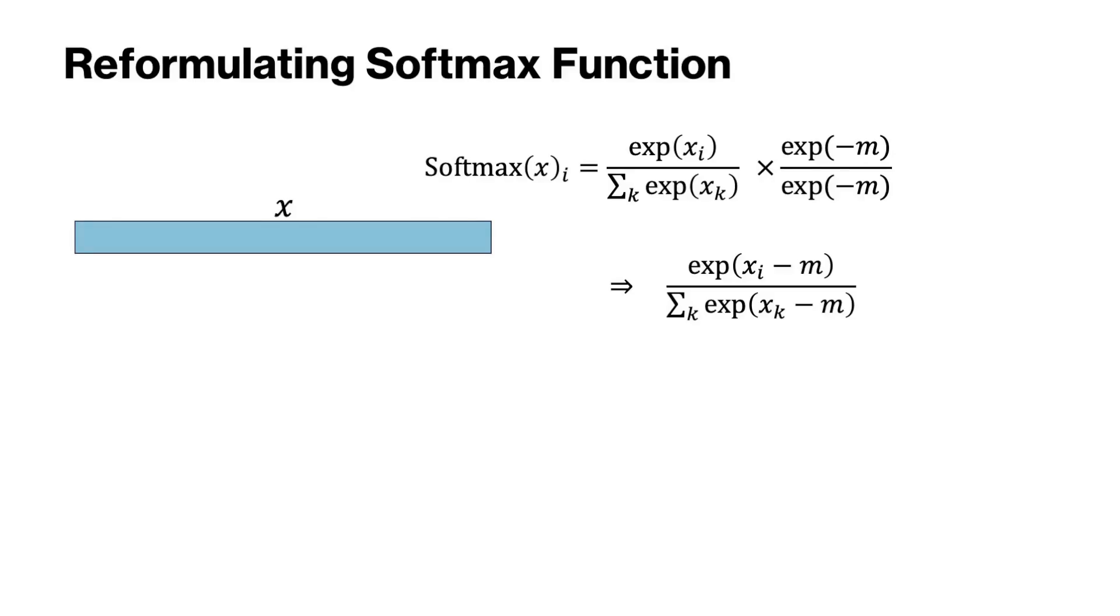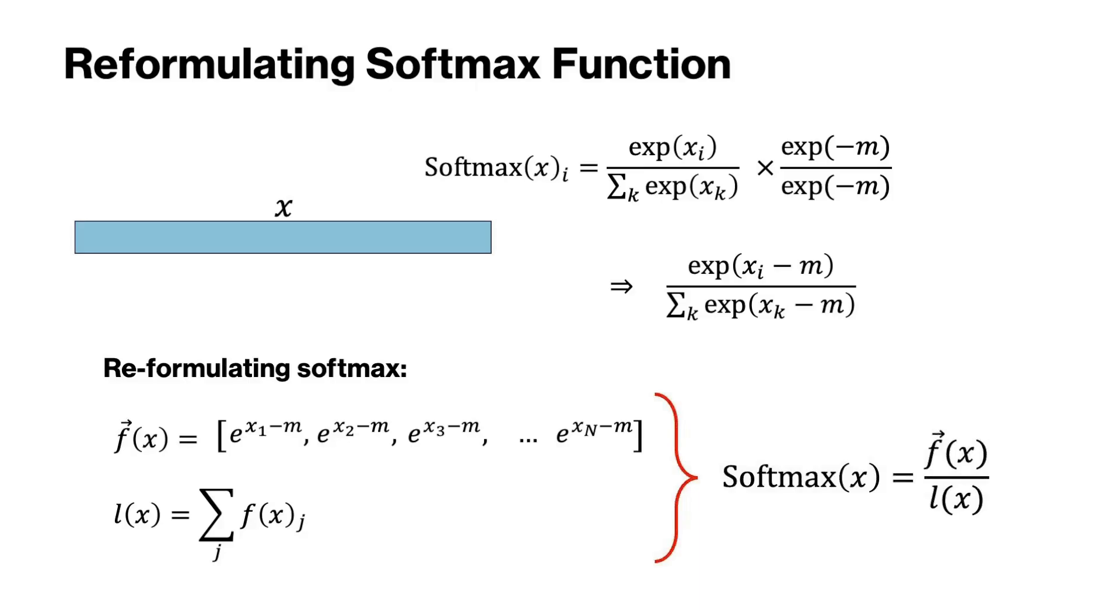Now we can reformulate softmax with two intermediate steps as follows. We calculate vector f of x to be e to the power of xi minus m for all elements in x, and the denominator will be the sum over vector f. With these two intermediate steps, we can compute softmax to be f of x divided by the normalization factor l of x.